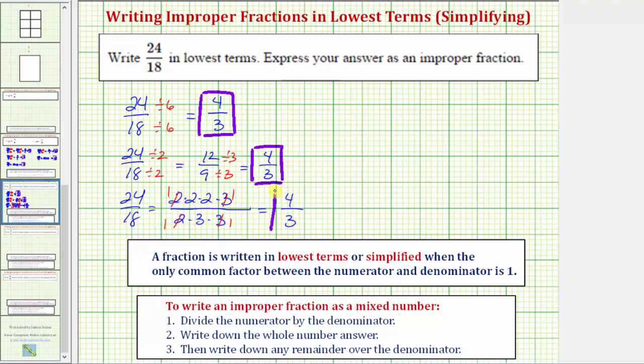So there are several ways to write the fraction in lowest terms. So we're actually done with this question, but let's also review how to write four-thirds as a mixed number.